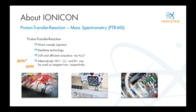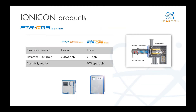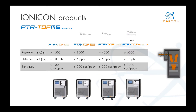The second part of the term PTRMS stands for mass spectrometry, and here we have the choice between quadrupole or time-of-flight mass spectrometers. Looking at a few of our products: the quadrupole-based ones include a compact instrument and a high-sensitivity instrument offering much more sensitivity and lower limit of detection. Nowadays, time-of-flight-based instruments are much more important, and we offer a big variety of different models, ranging from a compact model with a mass resolution of about 1,500, up to the high-end instrument with 6,000 mass resolution and a detection limit below one part per trillion.